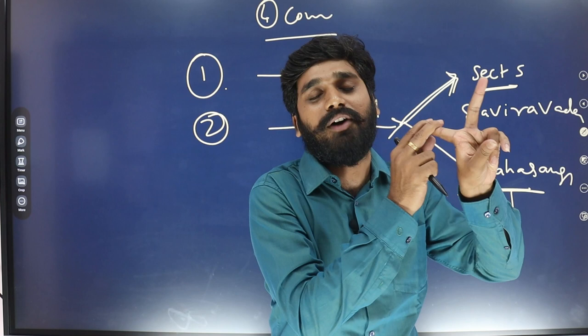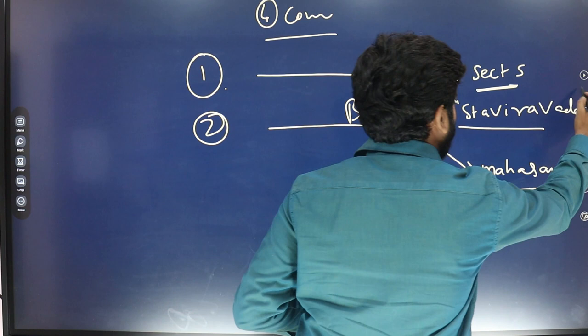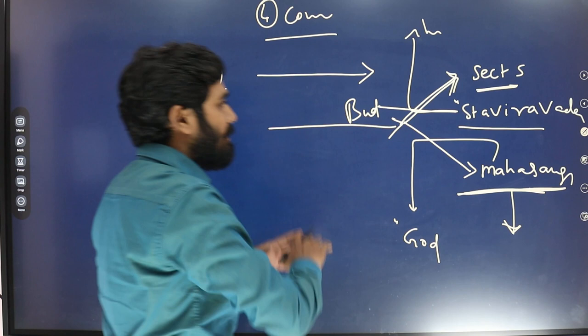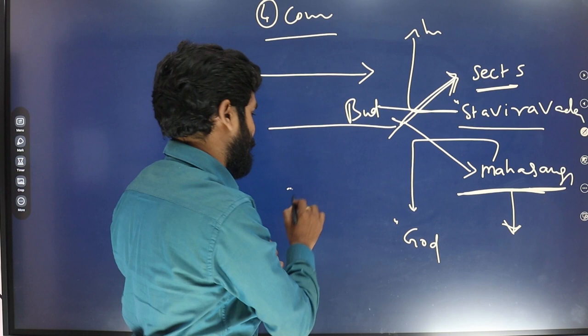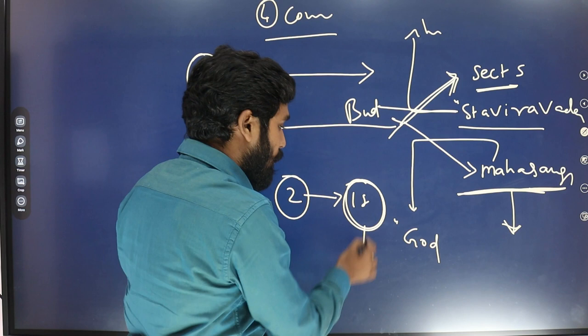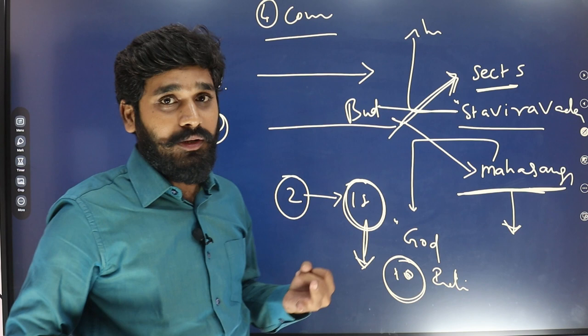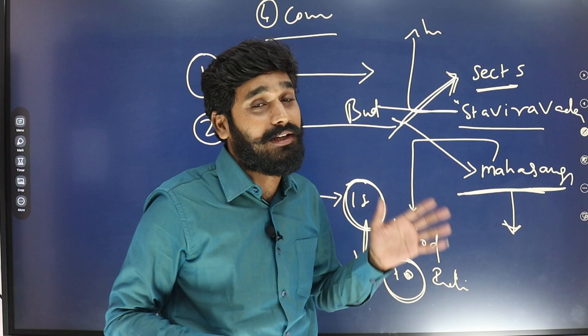These two sects — Staviravada and Mahasangika — further divided into 18 minor sects. Among the 18 sects, highly spread sects in India include the Sarvastivadin, Aparasheli, Uttarasheli, Rajagiraka, Siddharthika, Chaityaka, and Shalihundam. From these sects, you will encounter different questions from a prelims perspective.